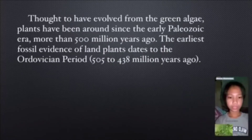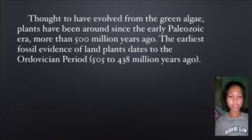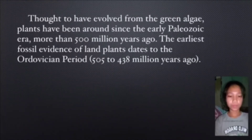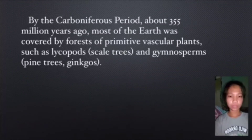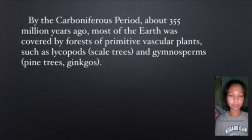Thought to have evolved from the green algae, plants have been around since the early Paleozoic era, more than 500 million years ago. The earliest fossil evidence of land plants dates to the Ordovician period, or 505 to 438 million years ago. By the Carboniferous period, about 355 million years ago, most of the Earth was covered by forests of primitive vascular plants, such as lycopods, or scale trees, and gymnosperms, or pine trees, and ginkgos.